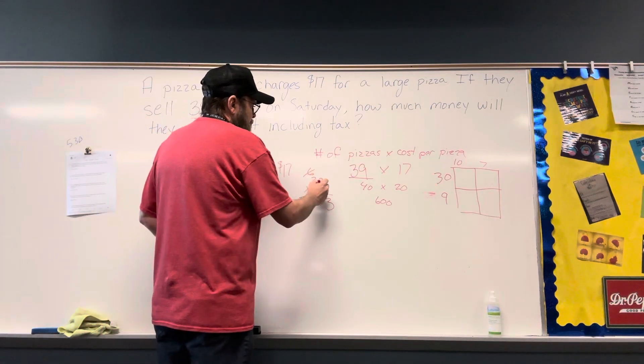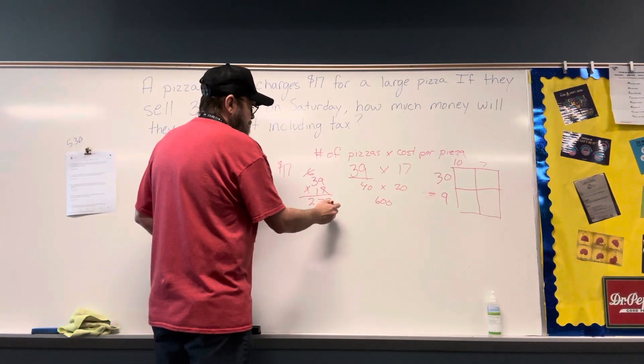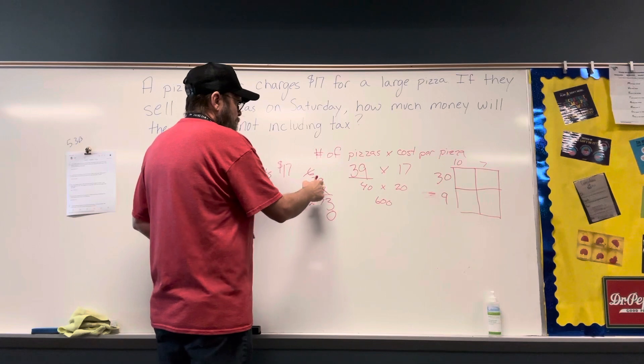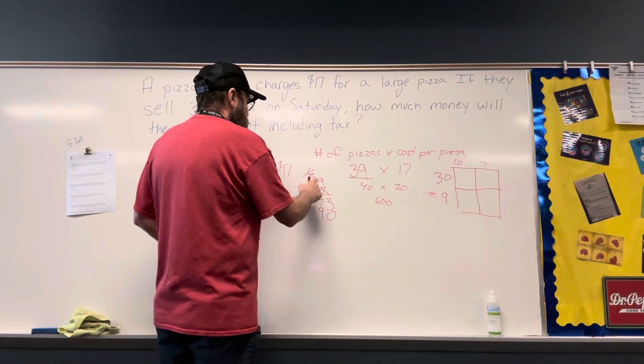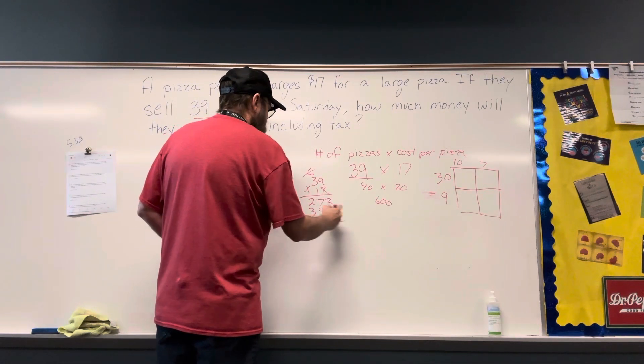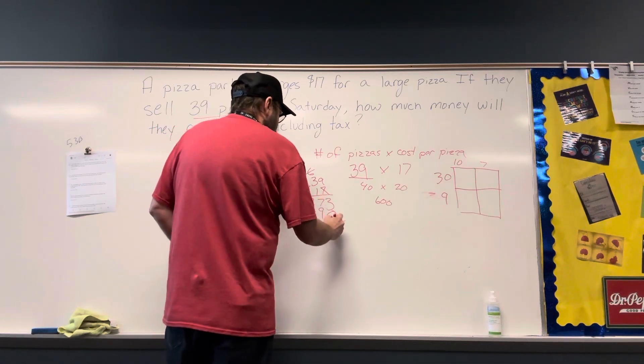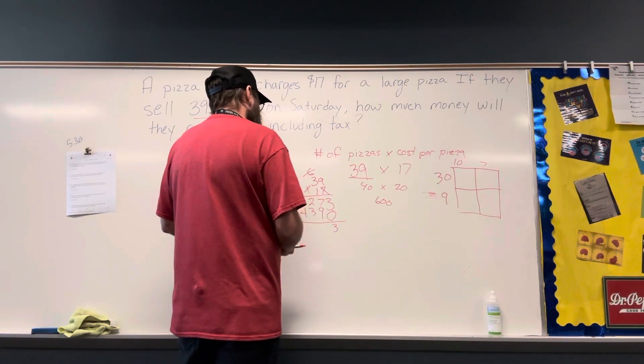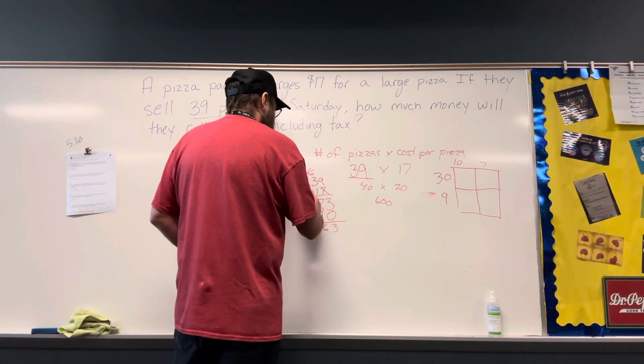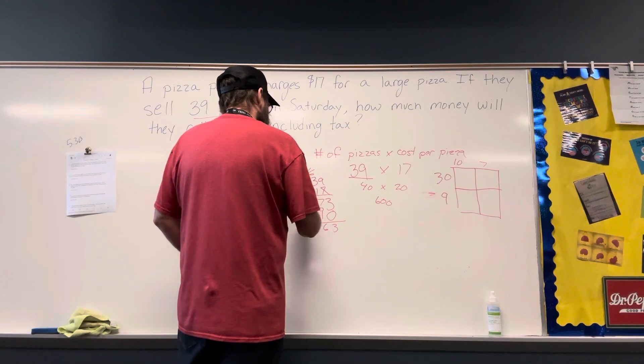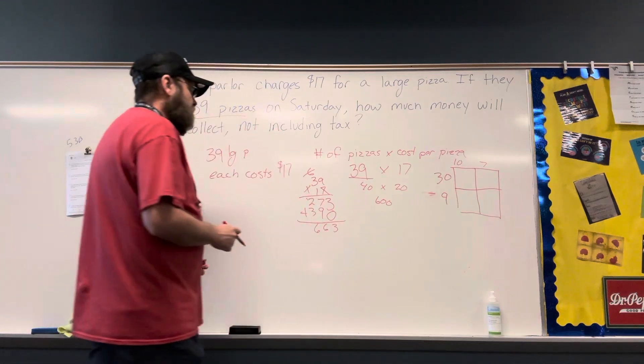Now I'm moving to the tens place, that's why that zero is there. 1 times 9 is 9, 1 times 3 is 3. We add: 3, 7 plus 9 is 16, and 3, 4, 5, 6. So 663.